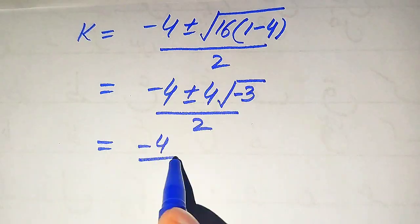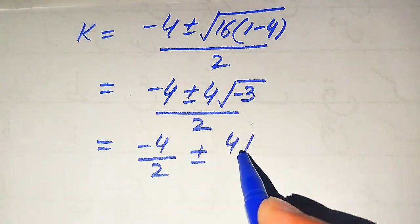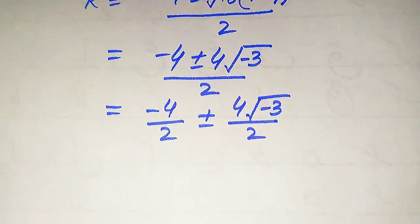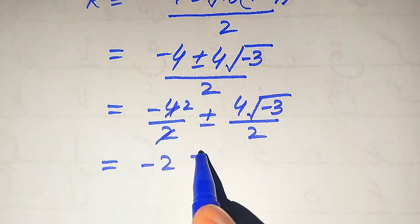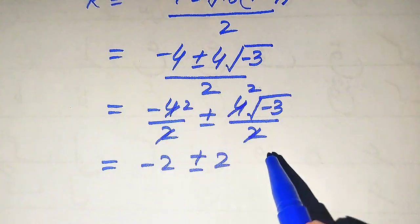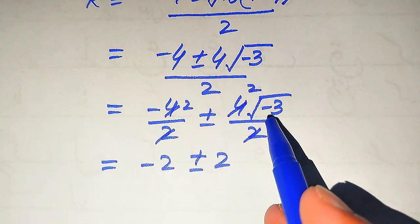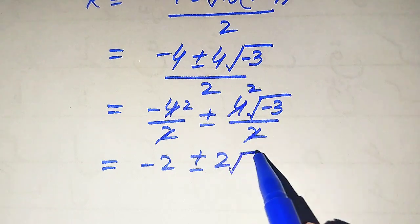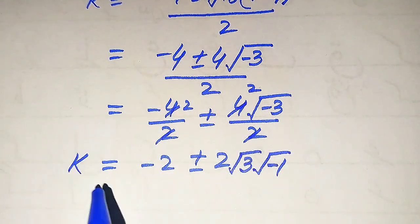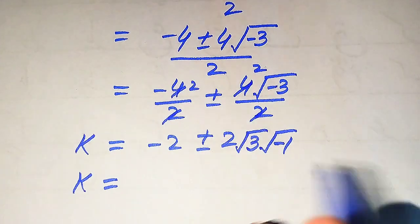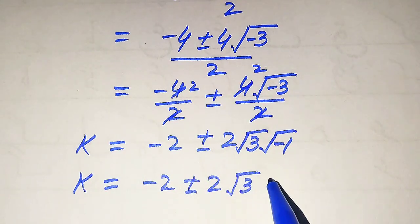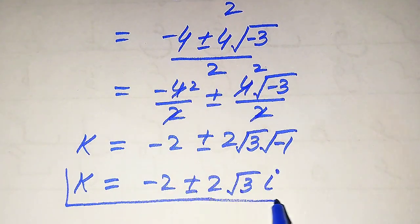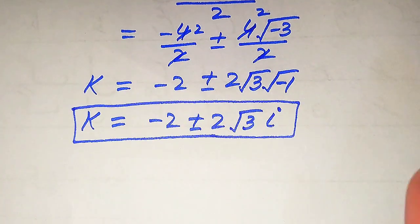Breaking the fraction: minus 4 divided by 2 plus or minus 4 times the square root of minus 3 divided by 2. Simplifying, we get minus 2 plus or minus 2 times the square root of 3 times the square root of minus 1. Since the square root of minus 1 equals i (iota), we obtain k equals minus 2 plus or minus 2i times the square root of 3. These are the two complex roots of the given equation.